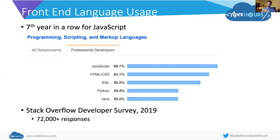Then I started seeing statistics like this. This was a poll done last year by Stack Overflow of 72,000 professional developers. For the seventh year in a row, the most popular used development language is JavaScript — almost 70% of developers reported using JavaScript. Close second: HTML, CSS — all of these being the languages of the web, of front-end development. So it's pretty clear JavaScript is popular and has been for a while now.